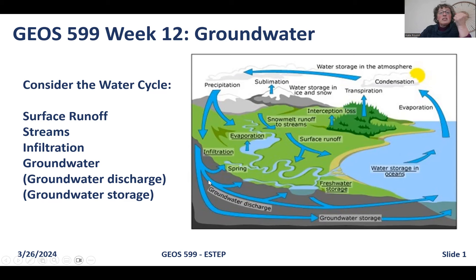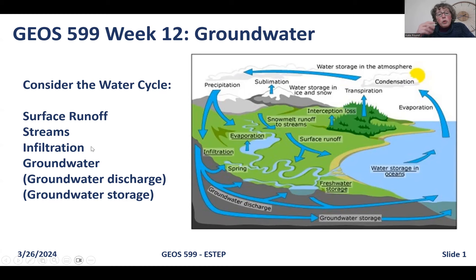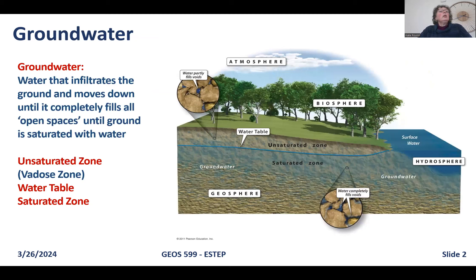Water stored in earth materials can supply springs, rivers, streams, and lakes — that's groundwater discharge, when groundwater ends up feeding surface water features. Groundwater stored in earth materials is groundwater storage, and where it gets stored is in aquifers. Key terms here include surface runoff, infiltration — the process of water making its way into earth materials — and groundwater discharge and storage.